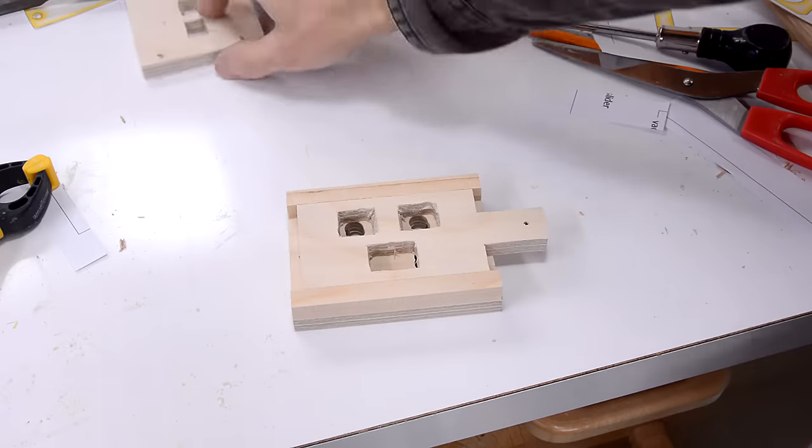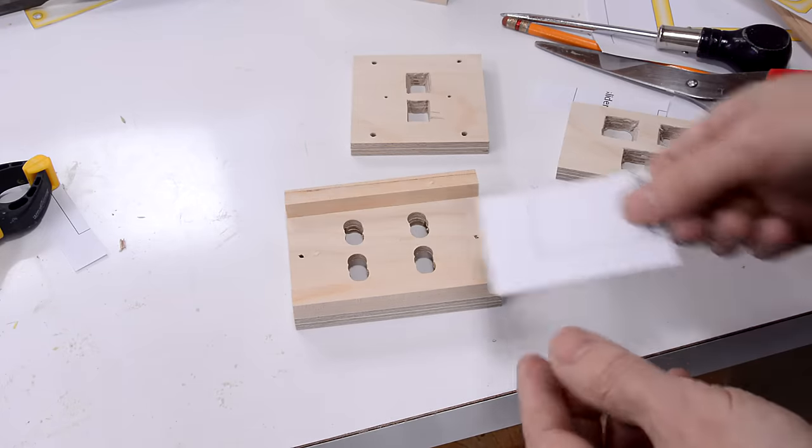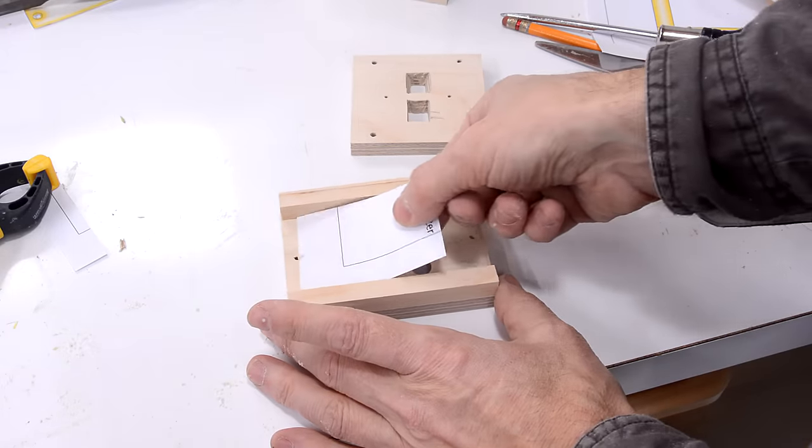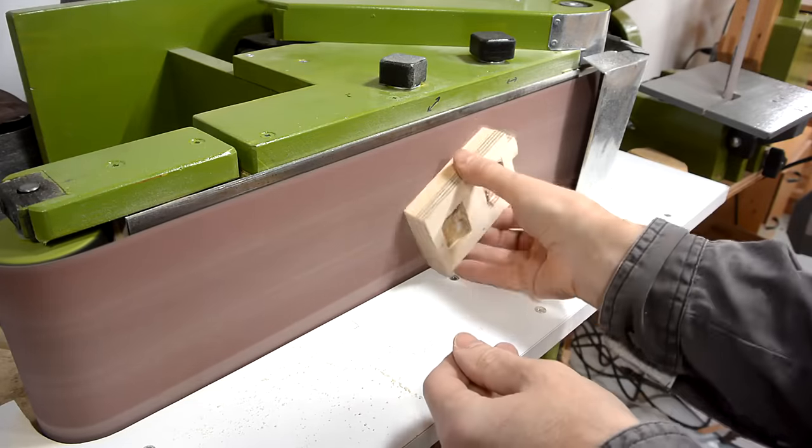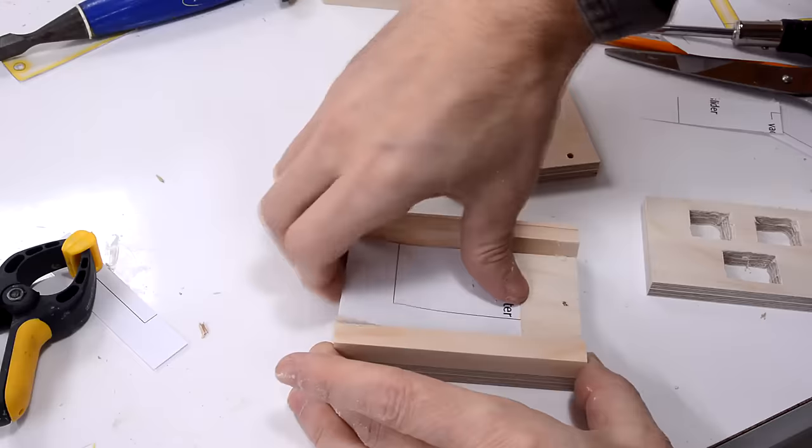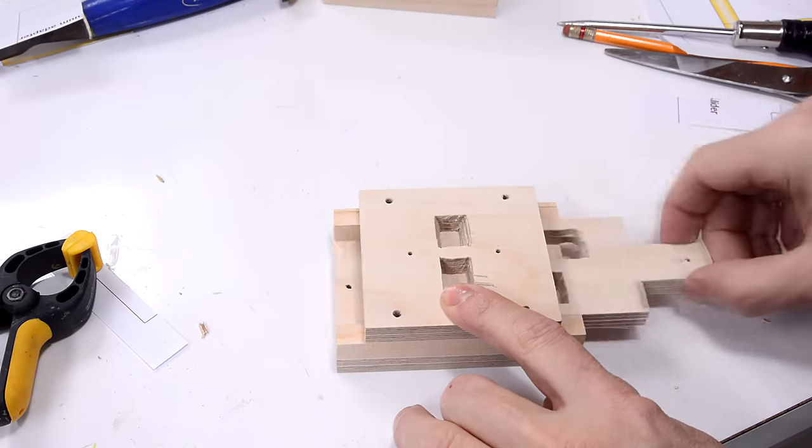Now to make sure this part slides easily when this is screwed on here, I'm gonna put a paper shim in here and then this on here and I'll sand this flush. And that way I can be sure I have just the right amount of gap in here for this to slide easily.